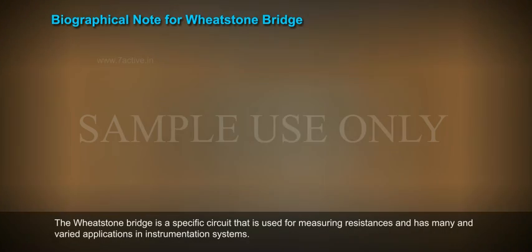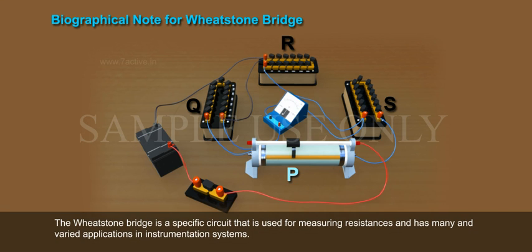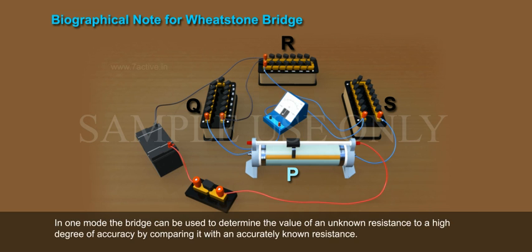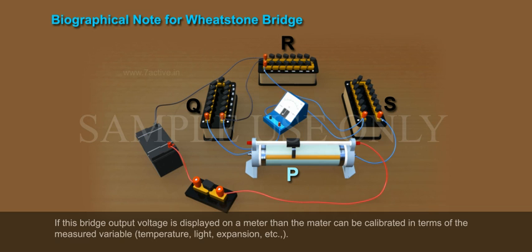The Wheatstone Bridge is a specific circuit used for measuring resistances and has many and varied applications in instrumentation systems. There are two basic modes of bridge operation. In one mode, the bridge can be used to determine the value of an unknown resistance to a high degree of accuracy by comparing it with an accurately known resistance. If the bridge output voltage is displayed on a meter, then the meter can be calibrated in terms of the measured variable: temperature, light, expansion, etc.